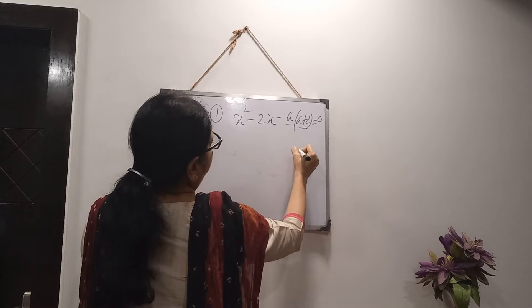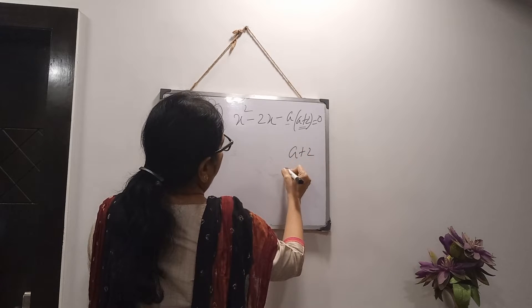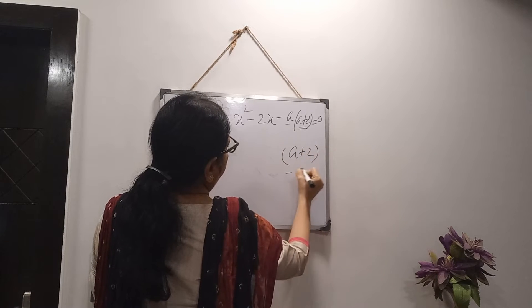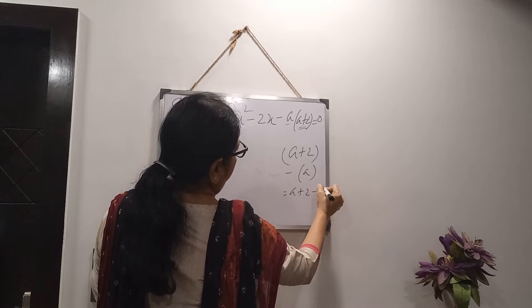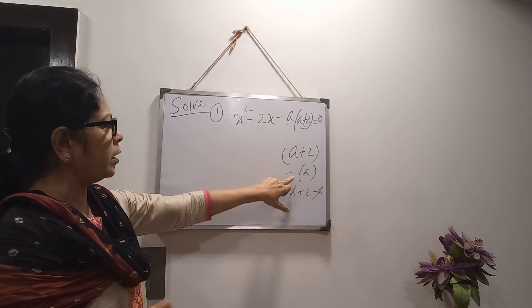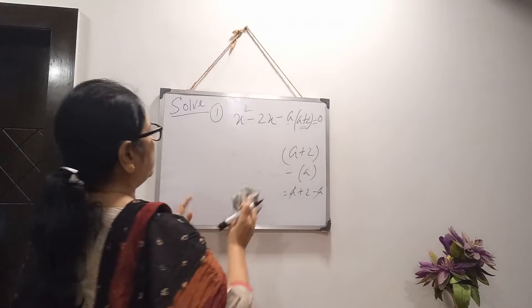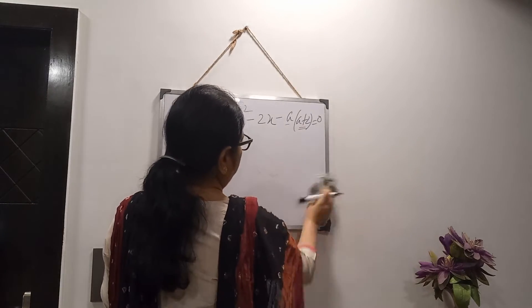So, what we will do? If a plus 2 and minus a, then what will happen? a plus 2 minus a, a is cancelled out 2. So, this minus this. So, my middle term factor will be in this form.